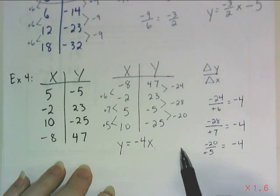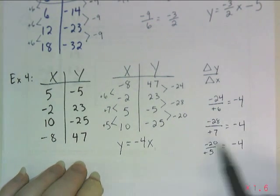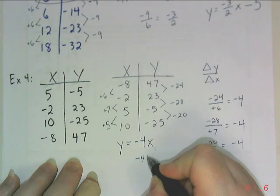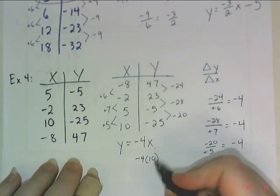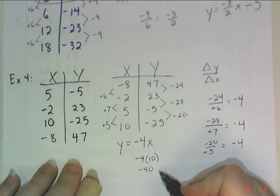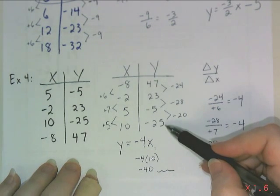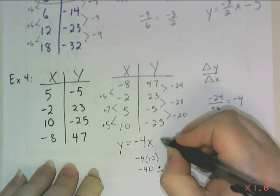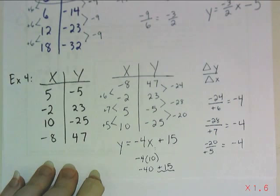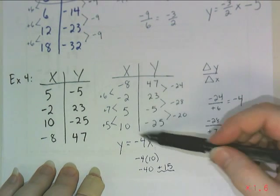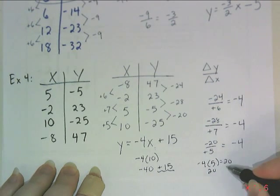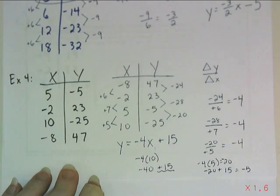Now I need to find the y-intercept. I'll pick where x is 10: my rate of change times 10 is negative 40. But the actual y value for x equals 10 is negative 25. To go from negative 40 to negative 25, I would have to add 15. So plus 15 is my y-intercept. Checking with x equals 5: negative 4 times 5 is negative 20, and negative 20 plus 15 equals negative 5, which is the correct y value. So the equation is correct.